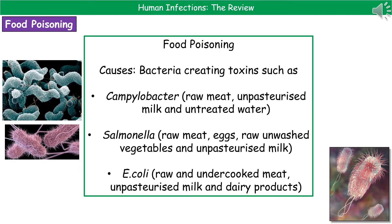The second infection is food poisoning. The causes tend to be bacterial — these bacteria produce toxins which give us all the symptoms. Three examples: Campylobacter, which is found on chicken, raw meat, unpasteurized milk, and untreated water. Salmonella, which is on raw meat, eggs, raw unwashed vegetables, and unpasteurized milk. And E. coli, which is associated with raw and undercooked meat, unpasteurized milk, and dairy products.